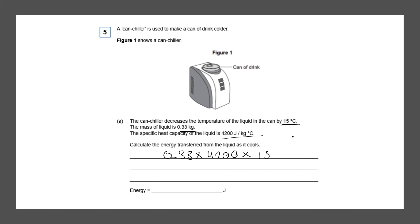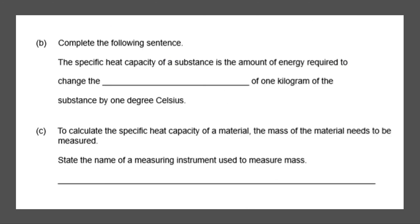So we have 0.33. This would give us an answer of 20,790. We can also convert that into kilojoules, 20.79 kilojoules.